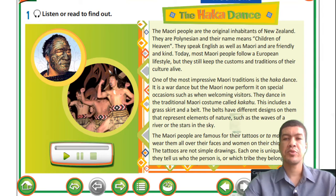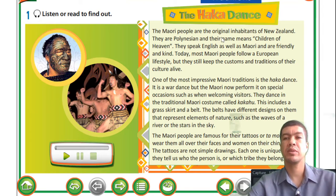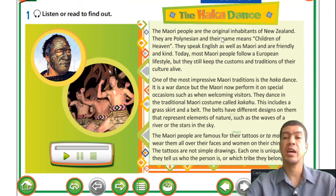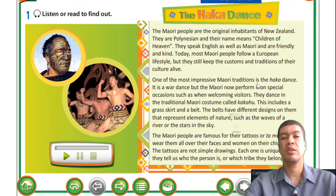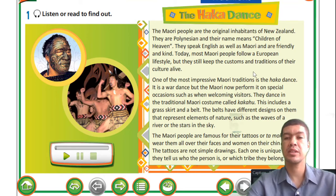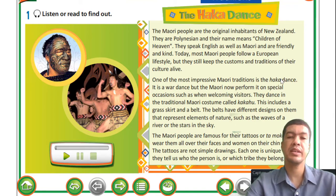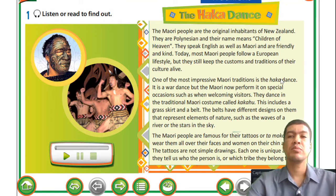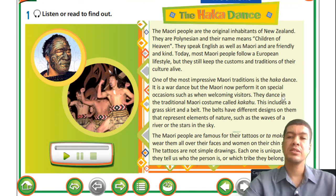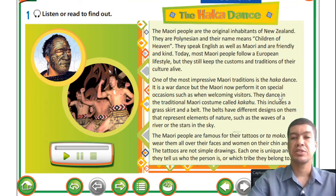Now we've read about the Maori people and how they are the original inhabitants of New Zealand. We came across a few words that were not familiar - for example the Haka dance is one of the words not familiar in the English culture. The same with kakahu and tamoko. These are words not familiar in the English language but they are words from New Zealand and obviously have different meanings attached to them.